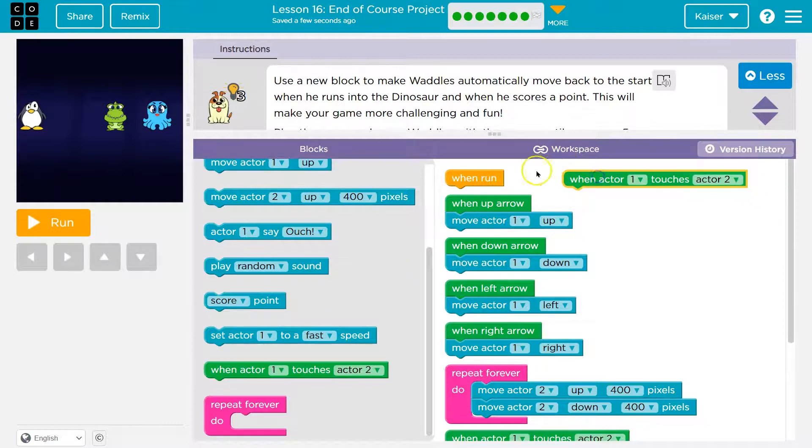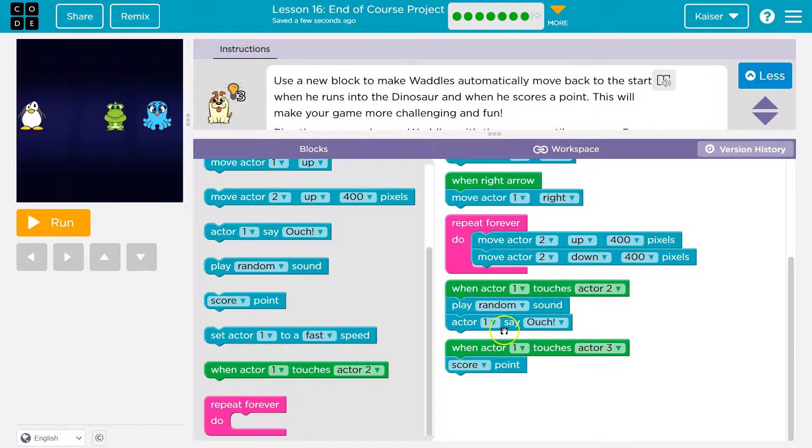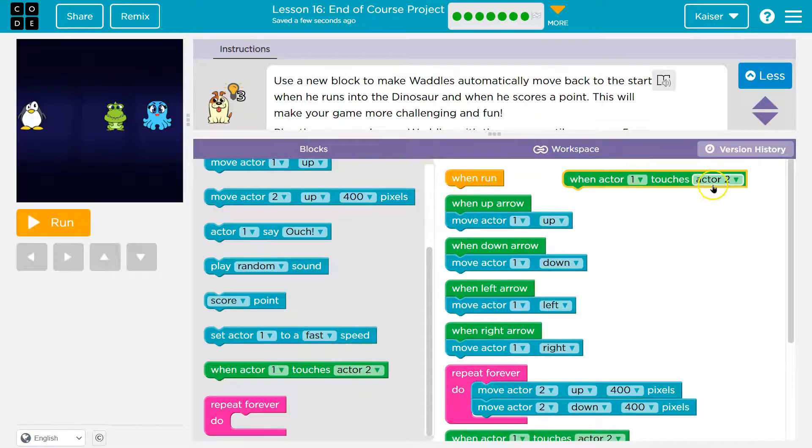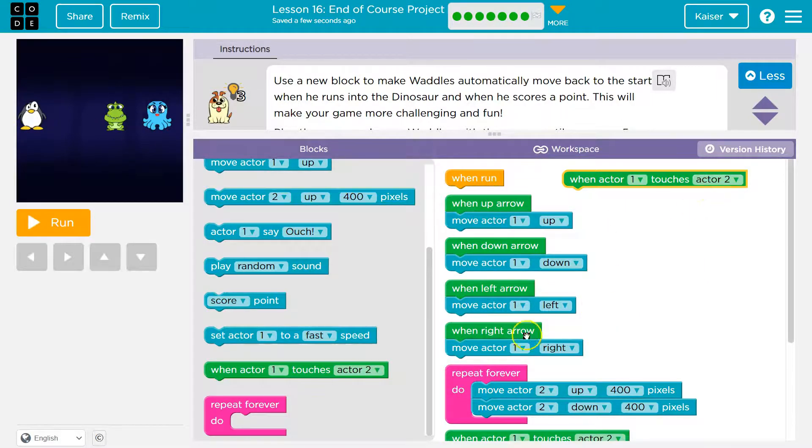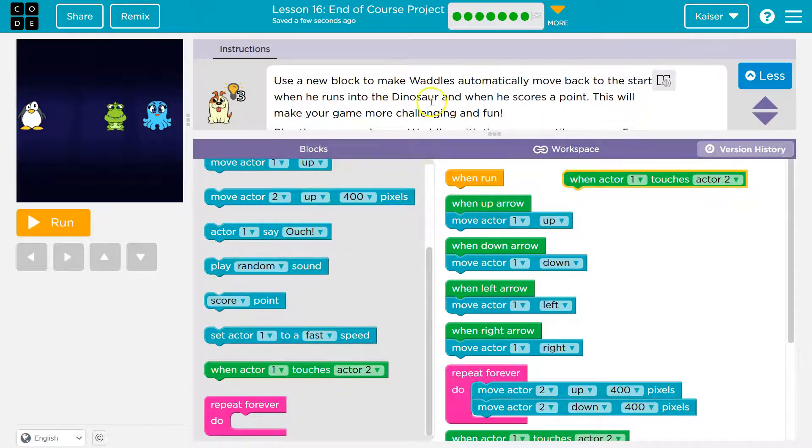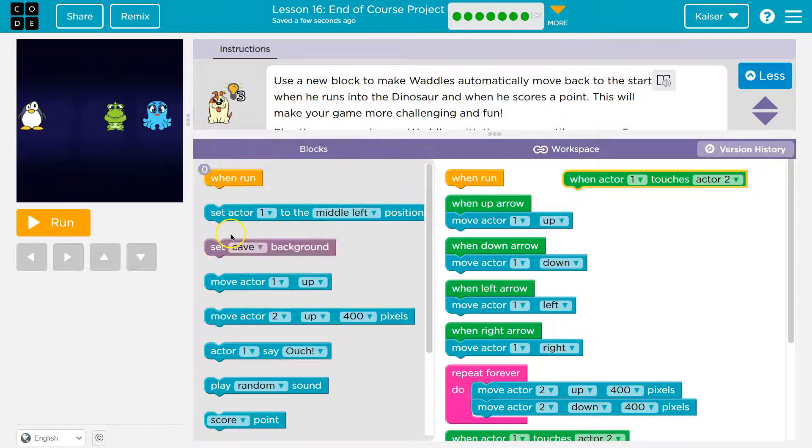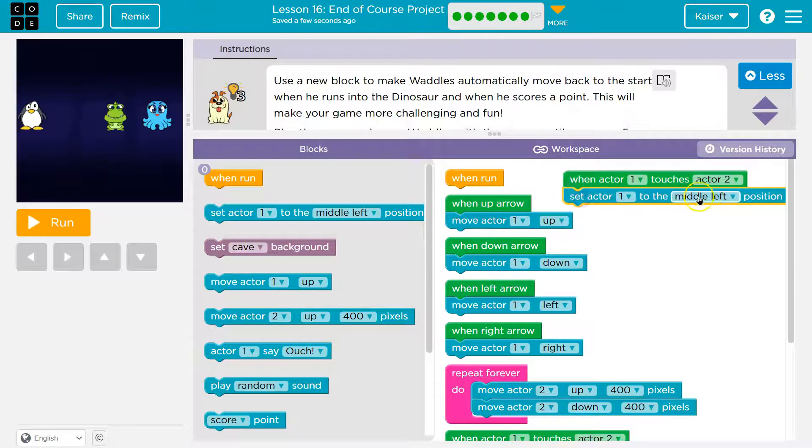So when actor one, who's Waddles here? Oh, it doesn't tell us. Nope. Oh, actor one must be that. Okay. So when actor one touches, who's the dinosaur? Actor two, because I say ouch when I hit the dinosaur. And when he scores a point. So when he touches actor two, he's going to, where does? Oh, 400, 400. Oh, move actor one to middle left. Yeah, that makes sense. And then also though, let's see if that works though.